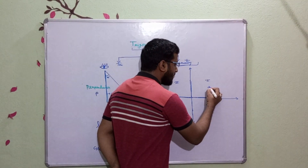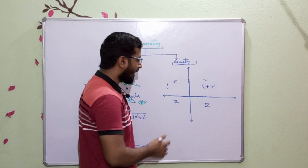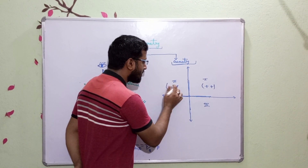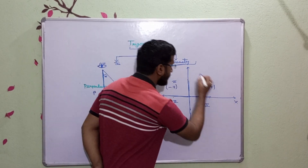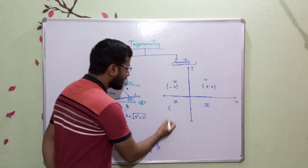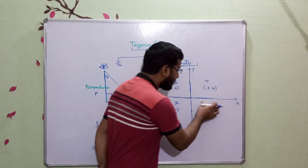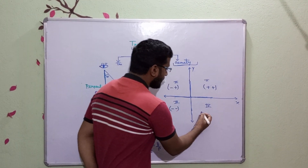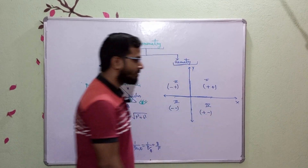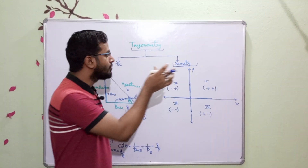In the first quadrant both x and y are positive. In the second quadrant, x-axis value is negative and y-axis value is positive. In the third quadrant, x-axis is negative and y-axis is also negative. But in the fourth quadrant, the value of x-axis is positive and y-axis is negative.